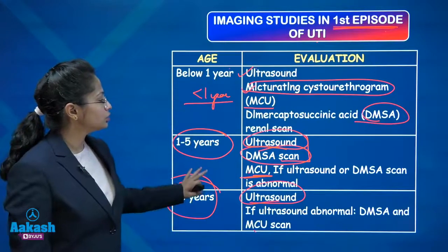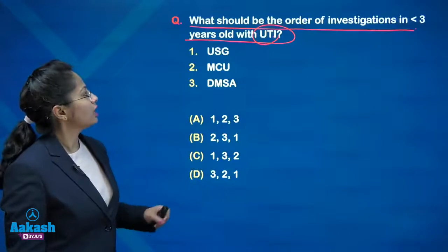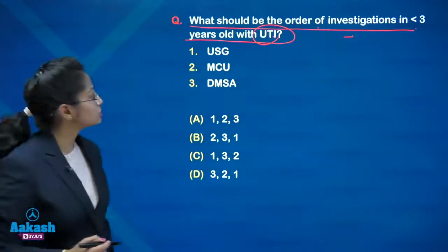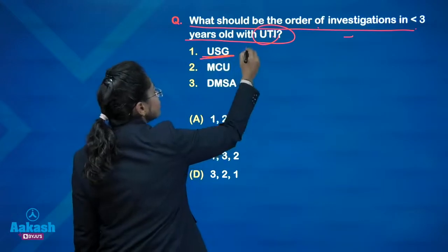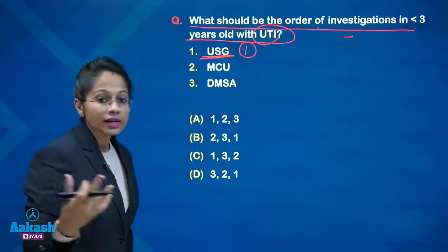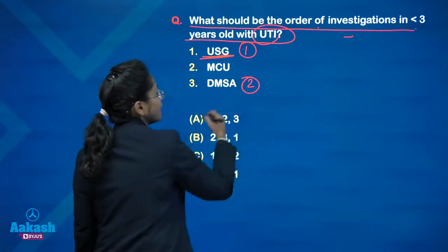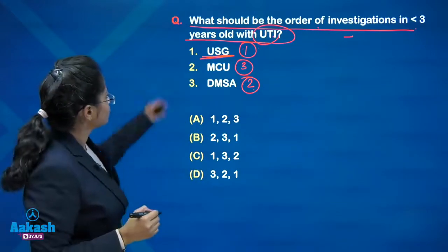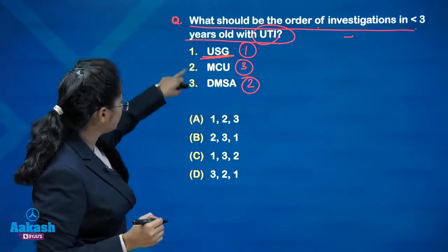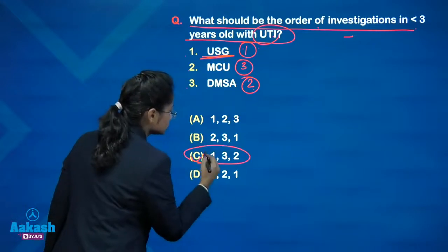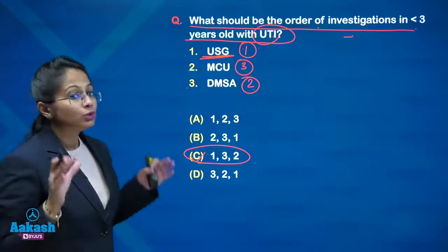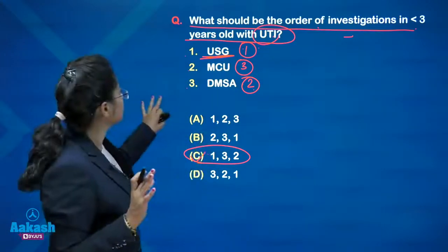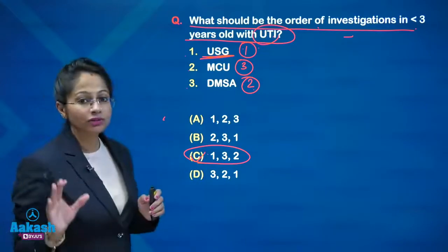This table you always have to remember. For a child less than 3 years of age with UTI: first do ultrasound, second do DMSA scan, and if either is abnormal, then do MCU. So the order is 1, 3, 2 — option C is correct. UTI is a very important topic and the INICET exam generally asks about UTI, so keep in mind the important points regarding urinary tract infections.